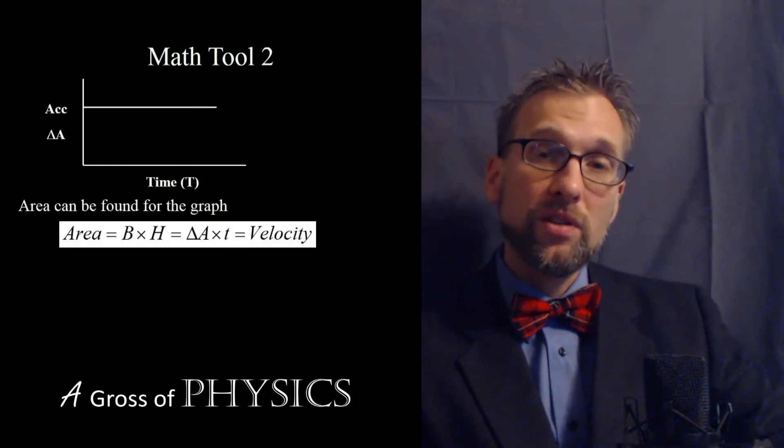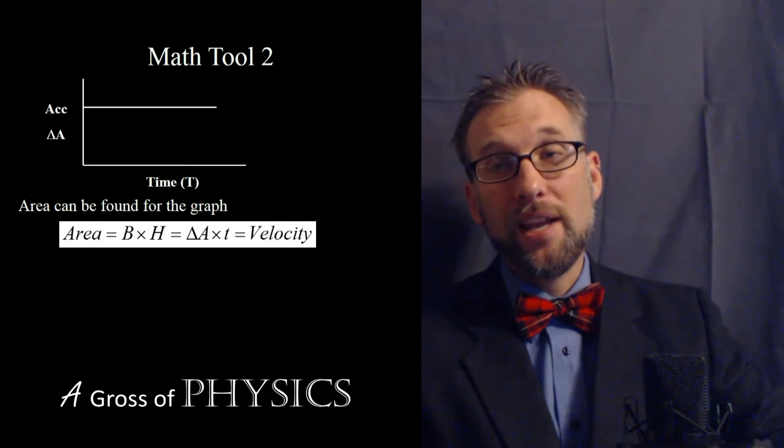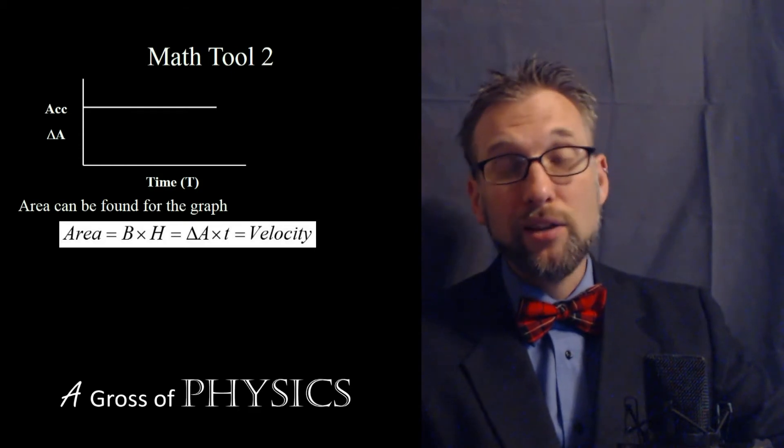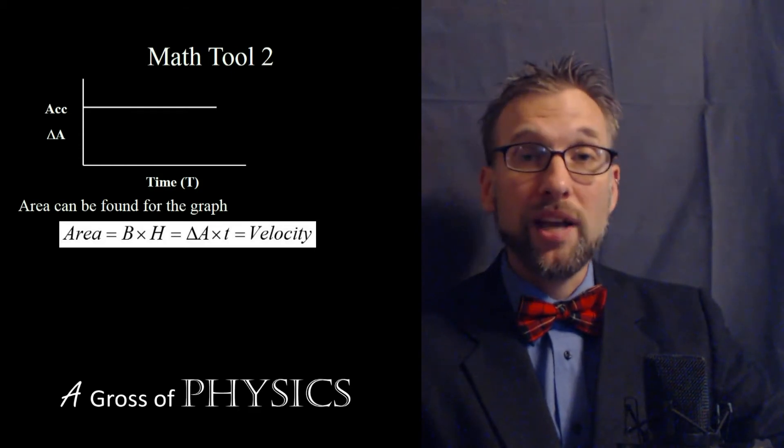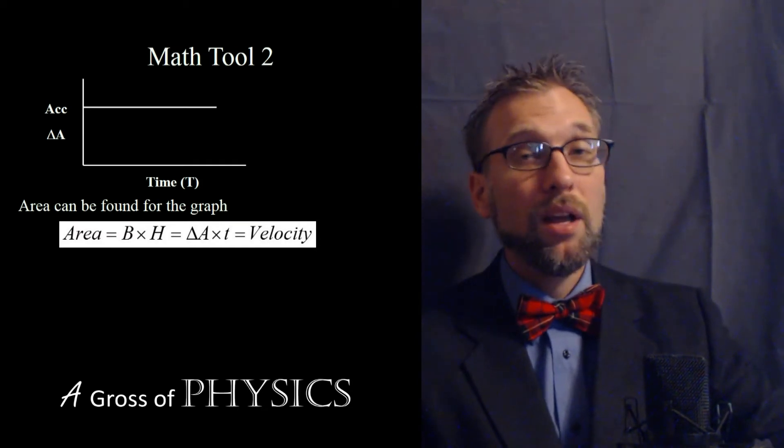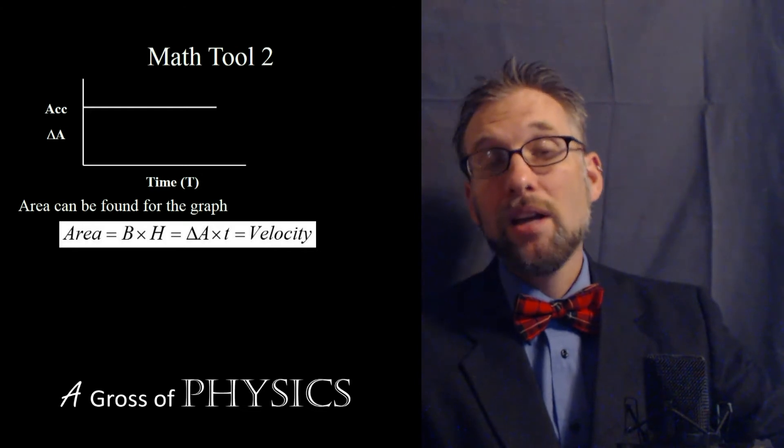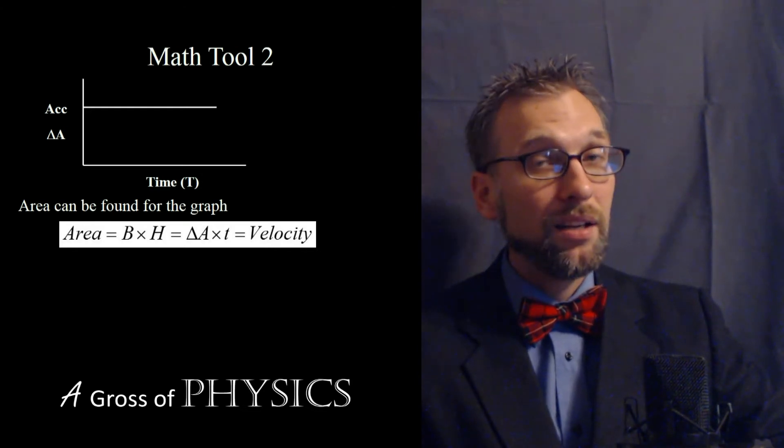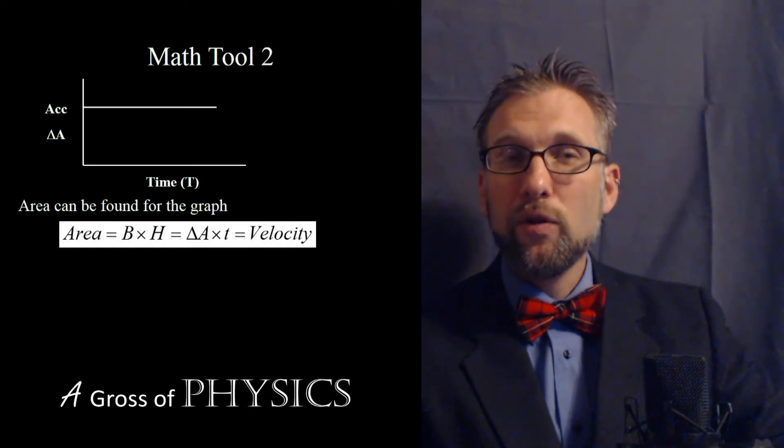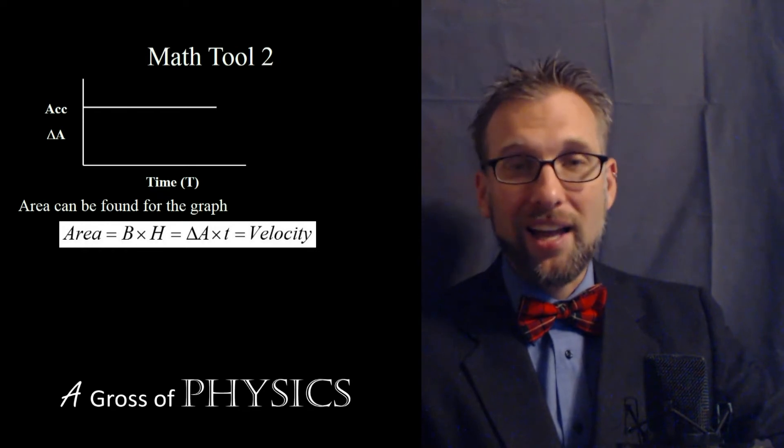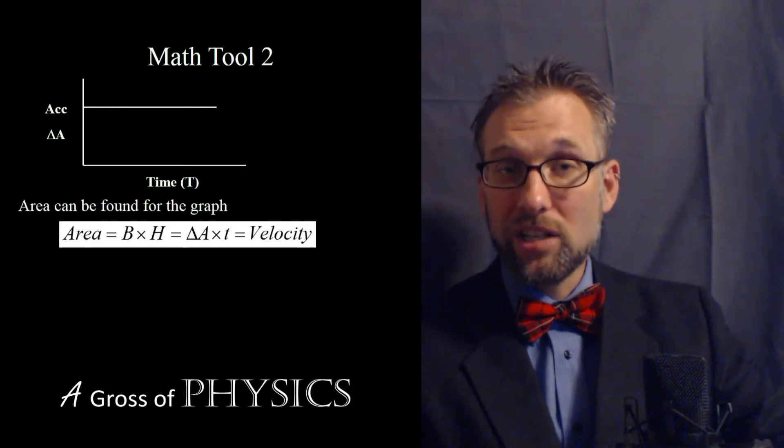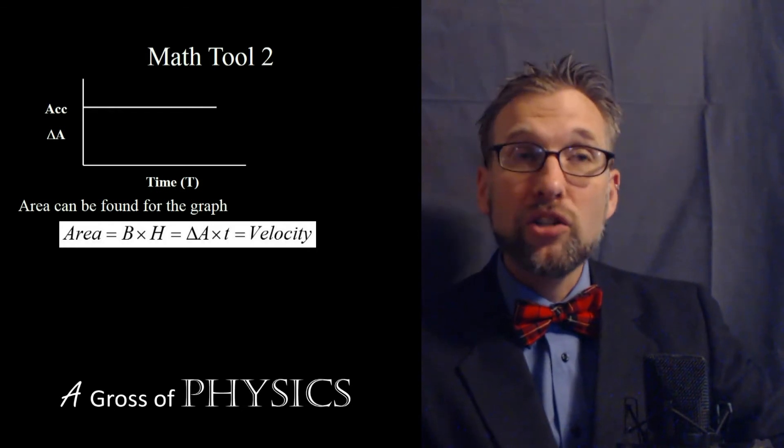So when we deal with acceleration versus time what we can do is find the area, ninety-nine percent of the time a rectangle, because if we have a flat line the shape underneath is going to represent the area of the acceleration and that's going to be a rectangle. Now the area is going to be base which is time times height which is change in velocity. Well if we think about it acceleration was velocity over time. If we rearrange that, acceleration times time will yield change in velocity.